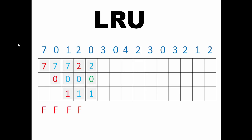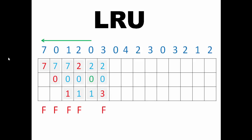The next page is 3, which is not in the page frame and the frame is full. Looking at usage history, 0 is the most recently used, then 2, then 1 — so 1 is the least recently used and will get removed. 3 will get added, giving us 2, 0, and 3, and there will be a page fault.